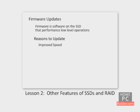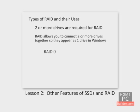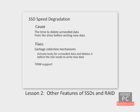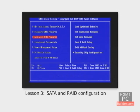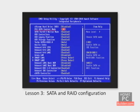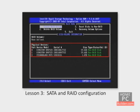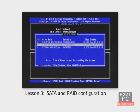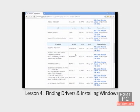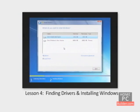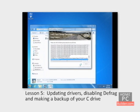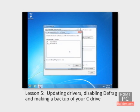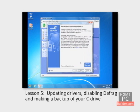In Lesson 2, we will cover other features of solid-state drives and RAID, including trim support, garbage cleanup, firmware updates, the advantages of using RAID, and the different types of RAID. In Lesson 3, we will show how to enable SATA or RAID mode in your motherboard's BIOS, and if you opt to use RAID, how to enter the RAID configuration utility and configure the array. In Lesson 4, we will find drivers for the SATA RAID controller and install Windows on the RAID array. In Lesson 5, we will update the drivers, disable defragmentation for all SSDs, and show how to make a backup of your C drive.